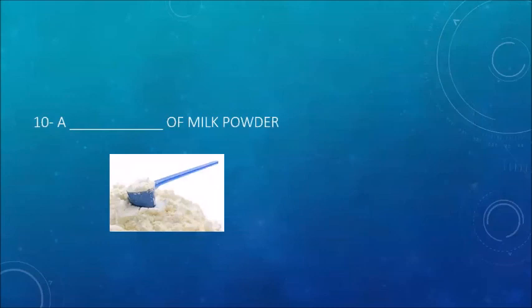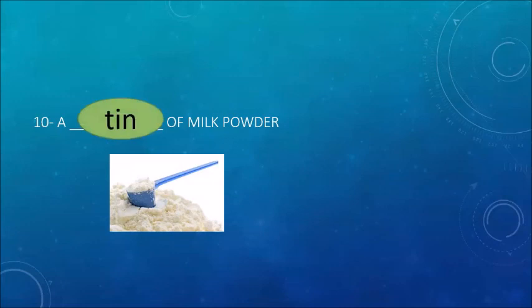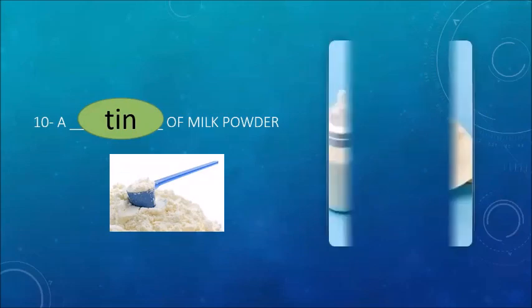The last is a ___ of milk powder. Powder is an uncountable noun — too difficult to count in number. But the countable noun — a tin of milk powder — enables us to have an estimation, a guess, an idea about the quantity of milk powder we want to talk about.